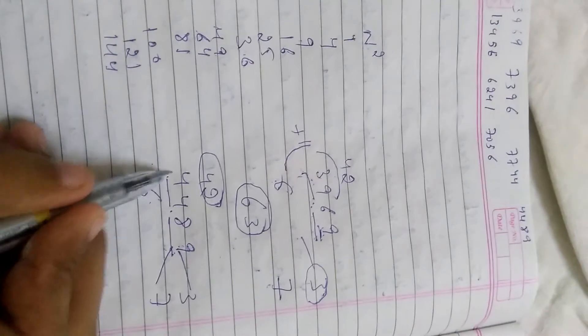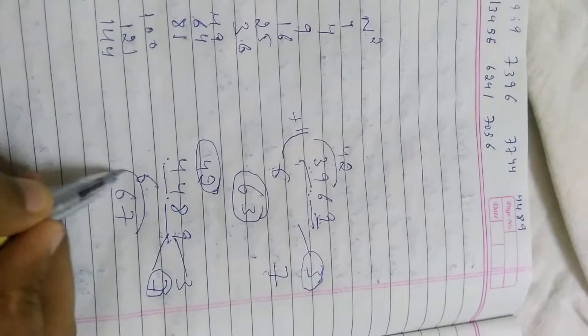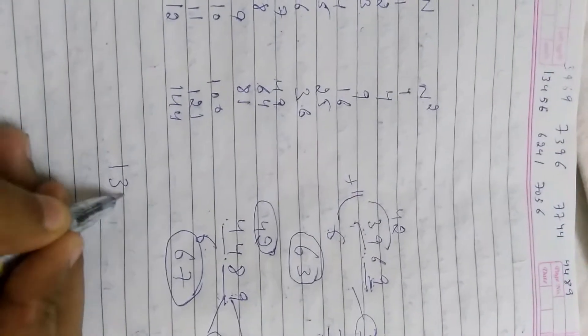But here 42 is less than 44, so we should take the number 7. So our answer is 67. Now take a 5-digit number, 13456.